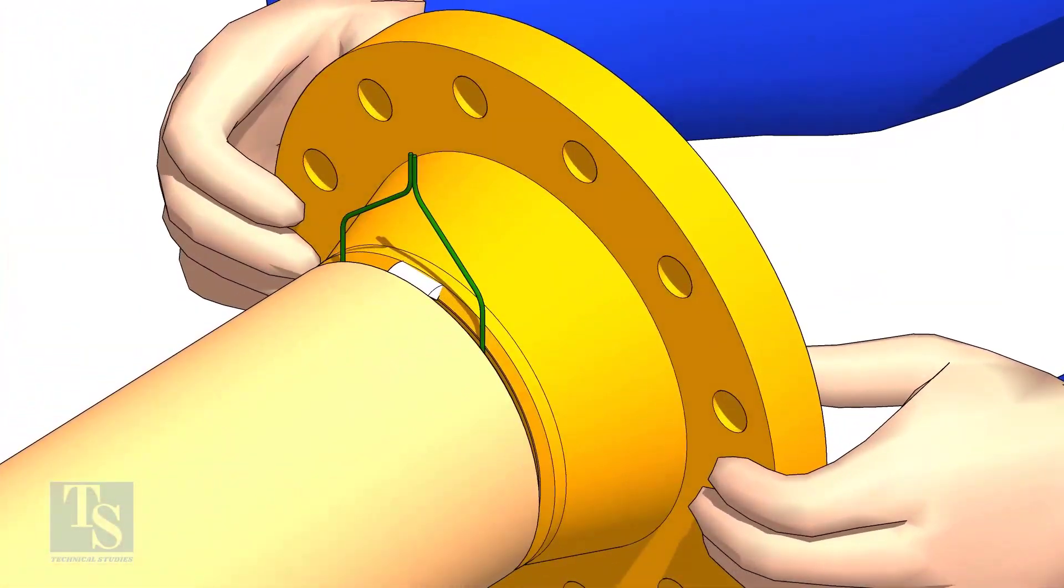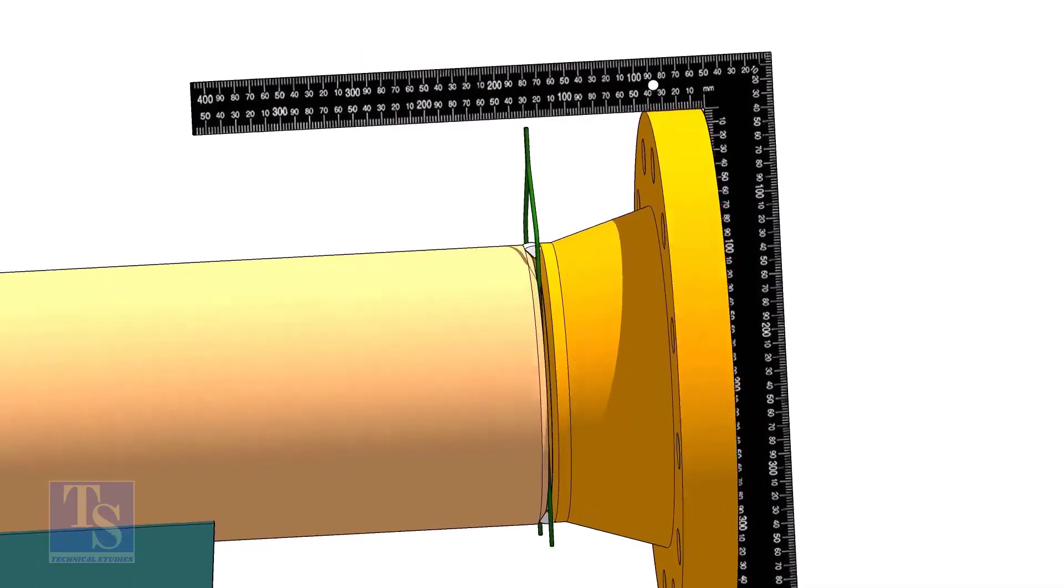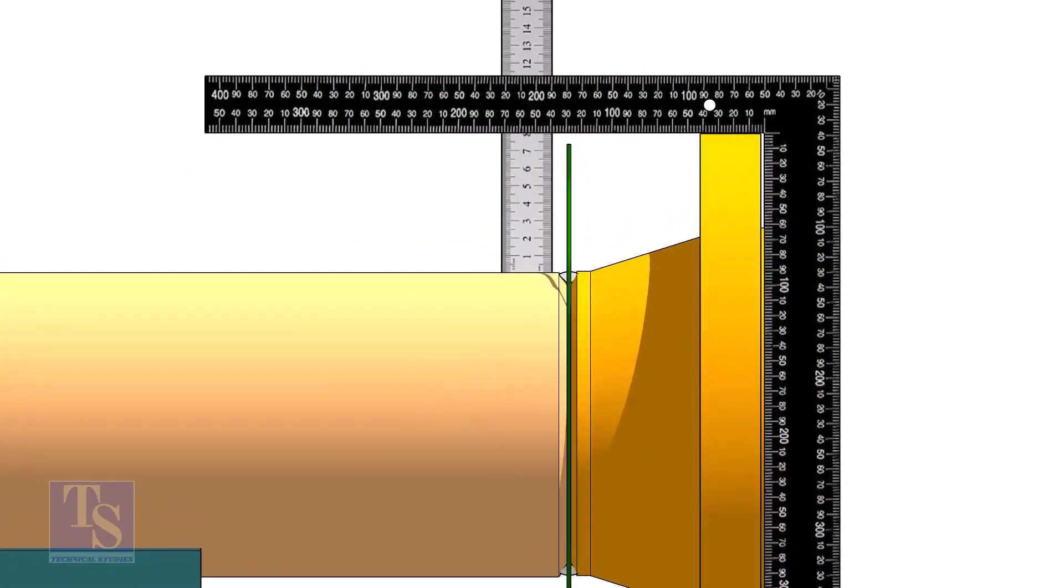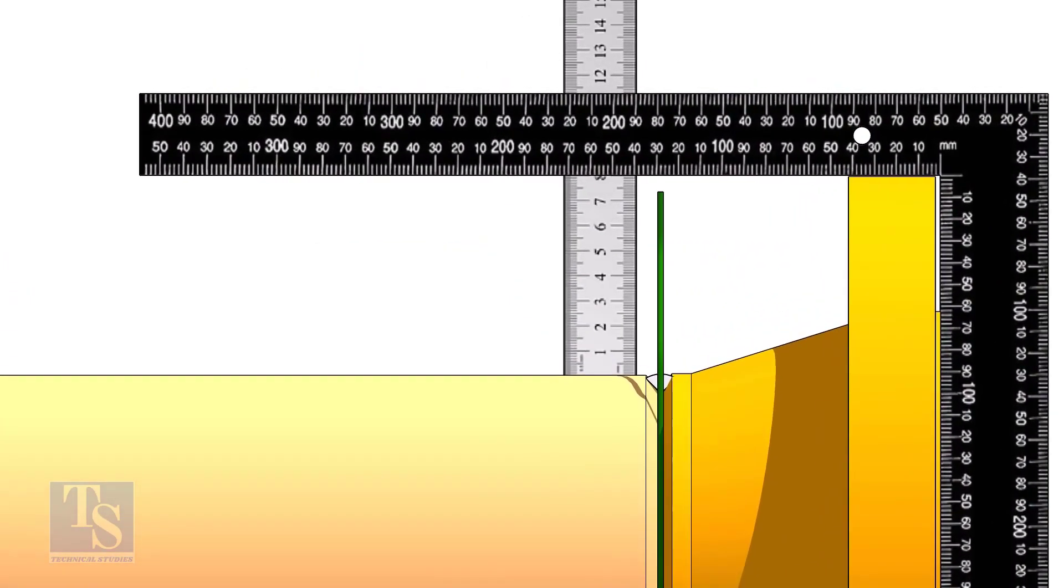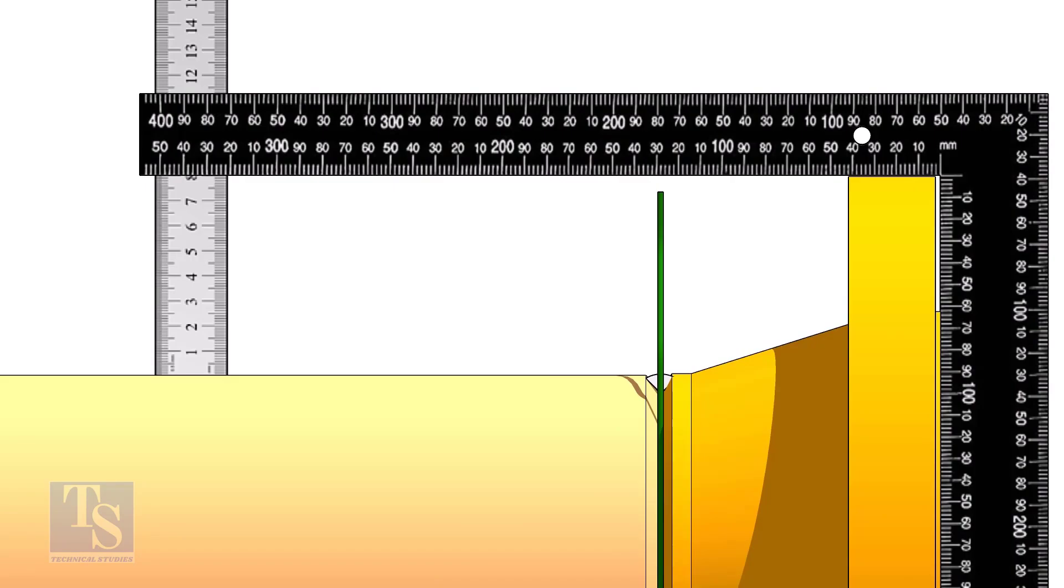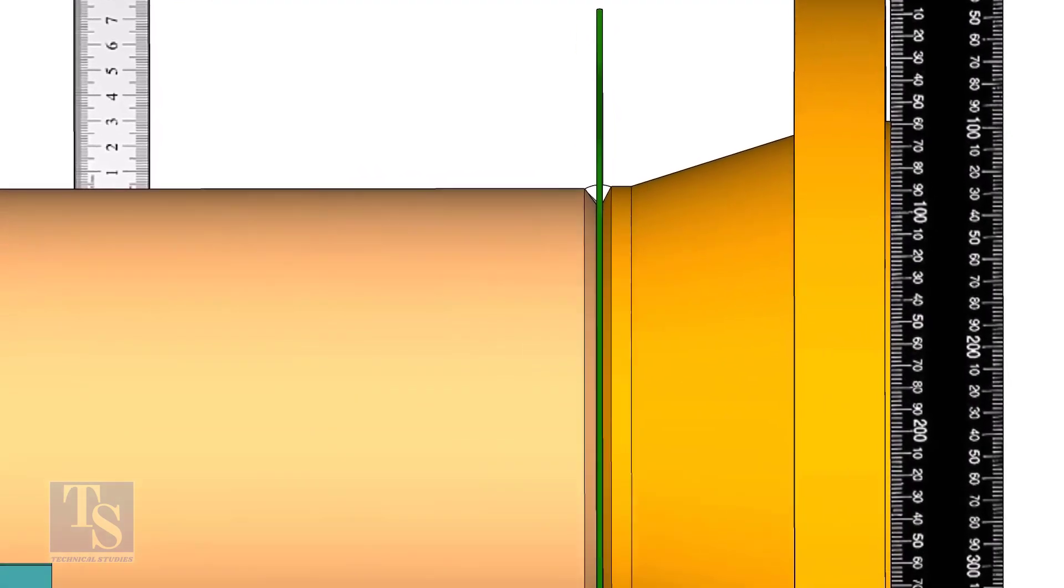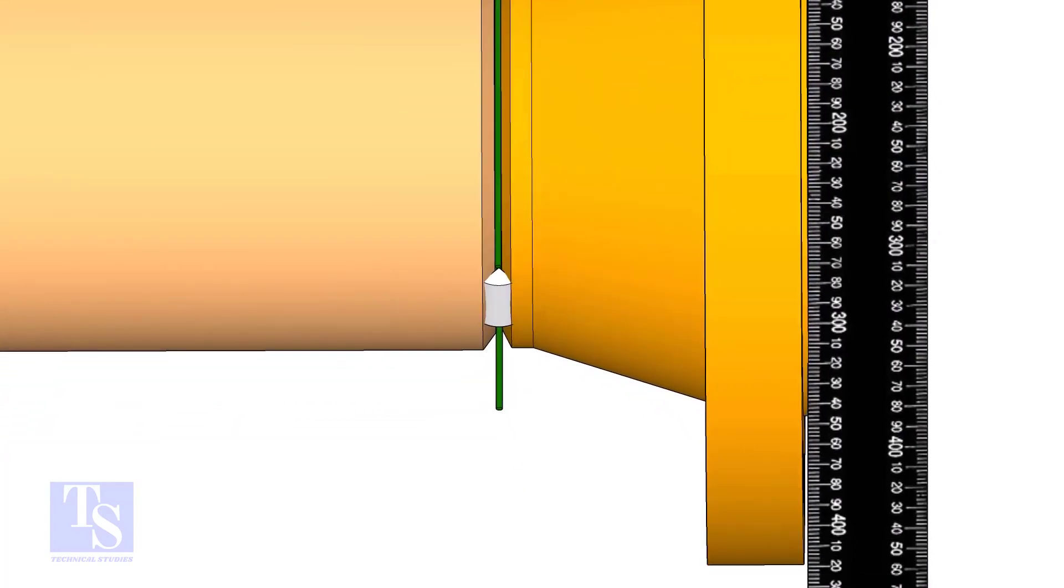Hold the flange with a gap rod in the joint. TAC weld on top side of the joint. Check the squareness of flange face to the pipe as shown. TAC weld at the bottom side of the joint.